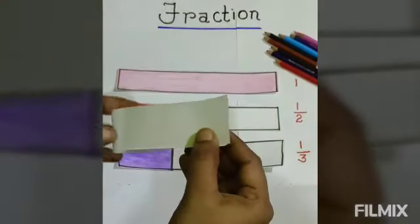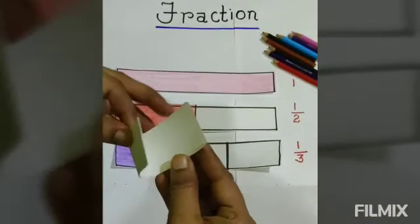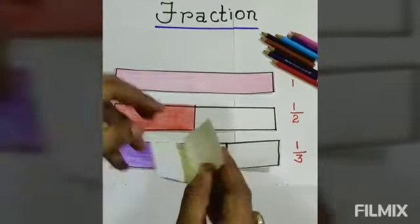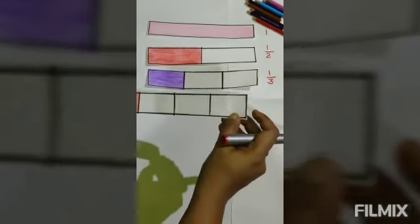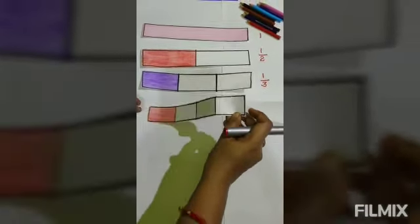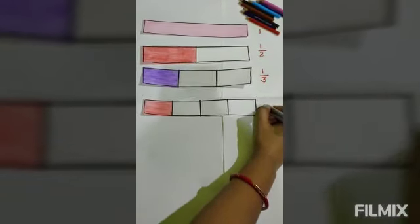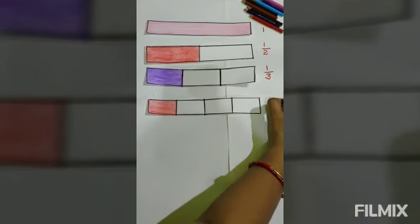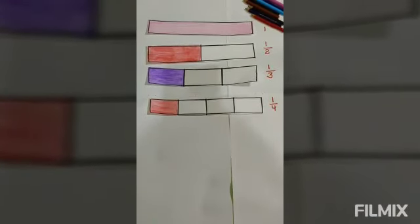Now again we take a strip of paper, fold it into half, and then fold it again. In this way we get four equal parts of that strip. Out of those four parts we color one part and write down the fraction. We have four equal parts and we have colored one part, so the fraction is one by four, or one fourth.